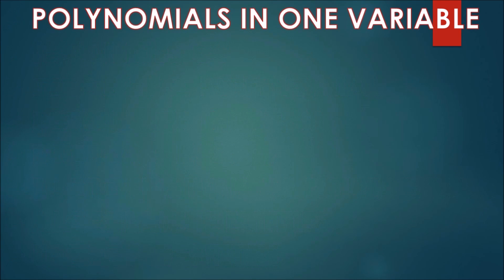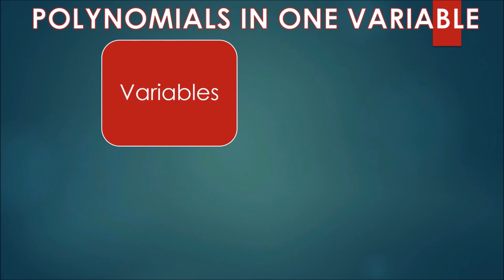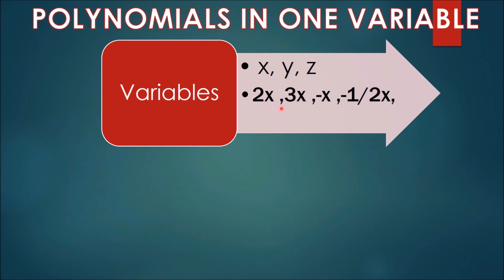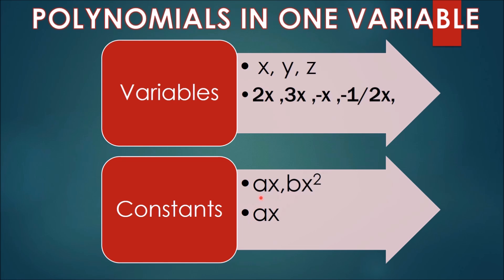Let us begin with polynomials in one variable. We use letters x, y, z etc. to denote variables. Notice that 2x, 3x, minus x, minus 1 upon 2x are algebraic expressions — all of the form a constant multiplied by a variable. If we want to write such an expression without knowing the constant, we use letters a, b, c etc., and the expression will be ax.